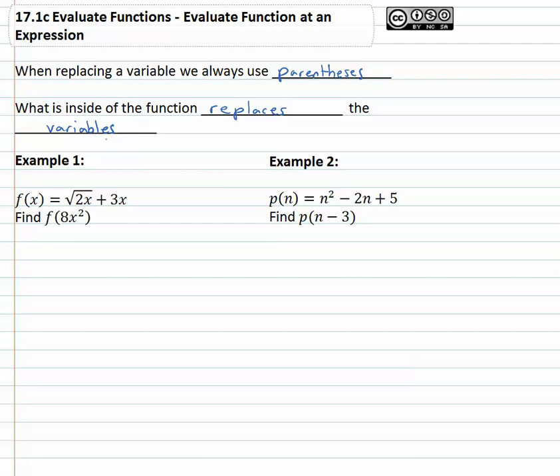So in our first example we know f of x is equal to the square root of 2x plus 3x and we're asked to find f of 8x squared. Notice what is inside the parentheses is 8x squared. That is going to be what replaces both of the variables in the expression.